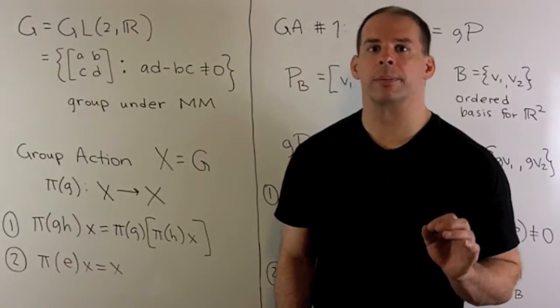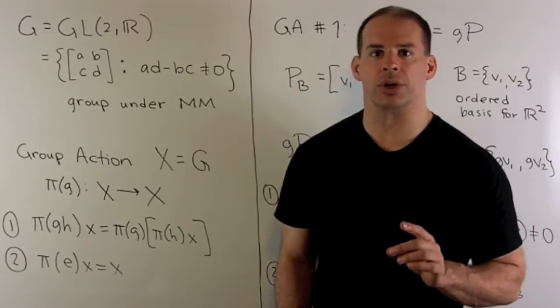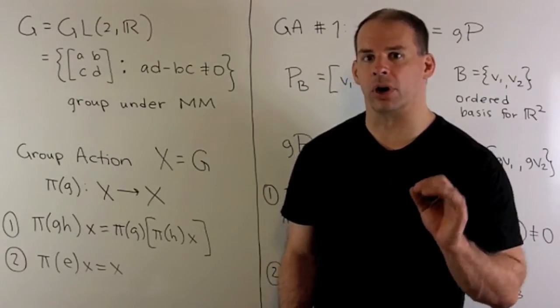Let G be equal to GL(2,R), the set of real two-by-two matrices with a non-zero determinant. These matrices are invertible.